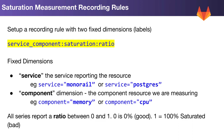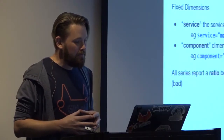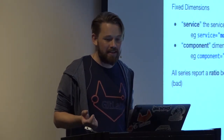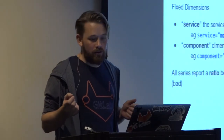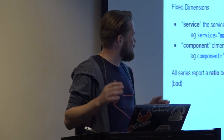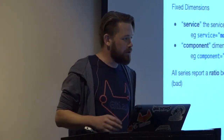Before I go further, how many people here actually use Prometheus or have used it? It's quite a Prometheus-heavy talk from here on out. What we want to do is have multiple saturation metrics that we track, and for each of these saturation metrics we create a recording rule in Prometheus. This recording rule is called Service Component Saturation Ratio — not a great name, but it sticks to the Prometheus naming convention. It has two fixed dimensions.